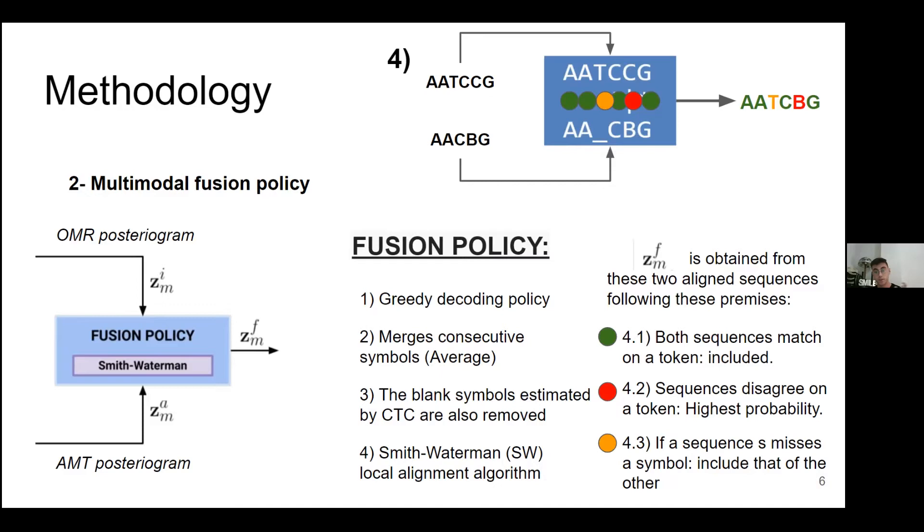In this case, we have to align both sequences, and we use a local alignment algorithm - in this case, Smith-Waterman. And we have three options: first, both sequences agree on a token, so we include it. Second, both sequences disagree on a token, so we get the token with the highest probability. Or third, if a sequence misses a symbol, we get the symbol of the other sequence.